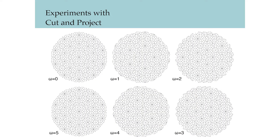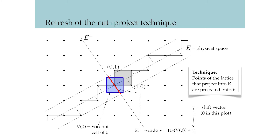Here are a few simple quasicrystals as a result of the cut and project method, where we project a slice of a higher dimensional lattice with different shift vectors. For those of you who are not familiar with the cut and project method, I'd like to give you a brief introduction here.